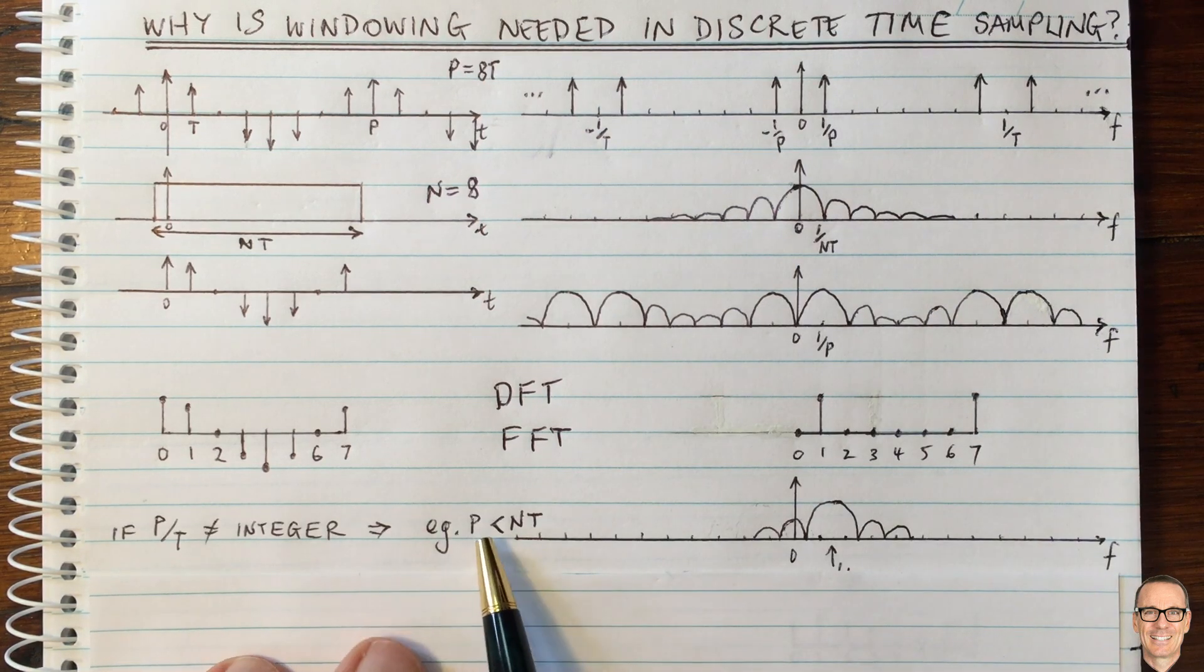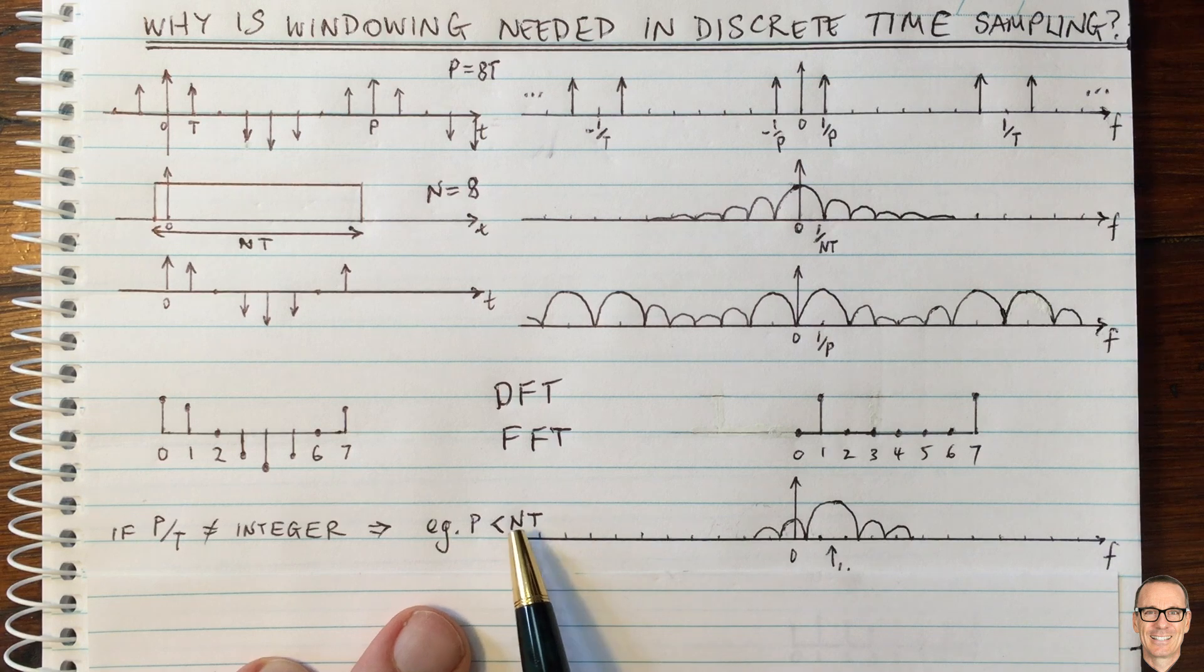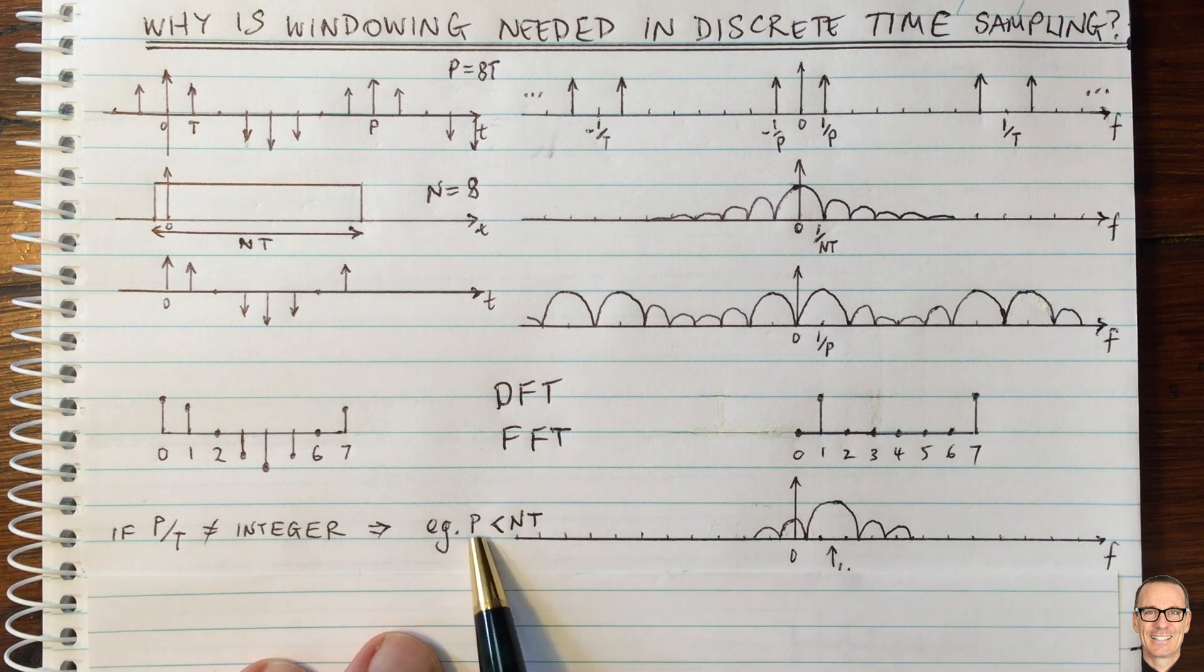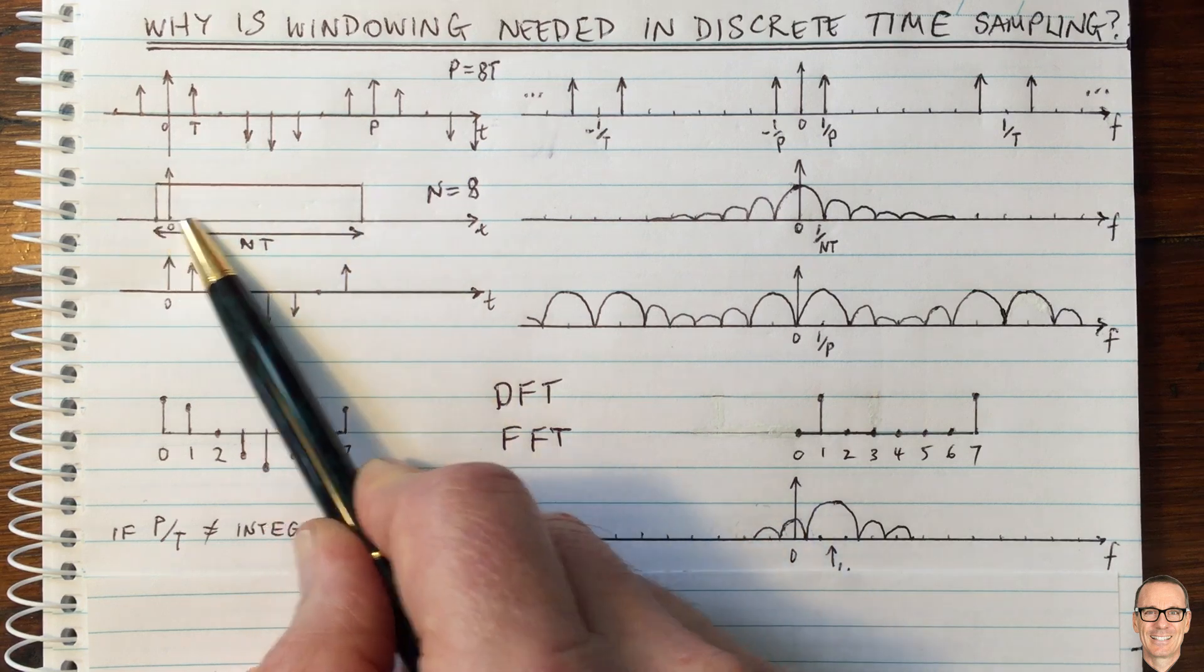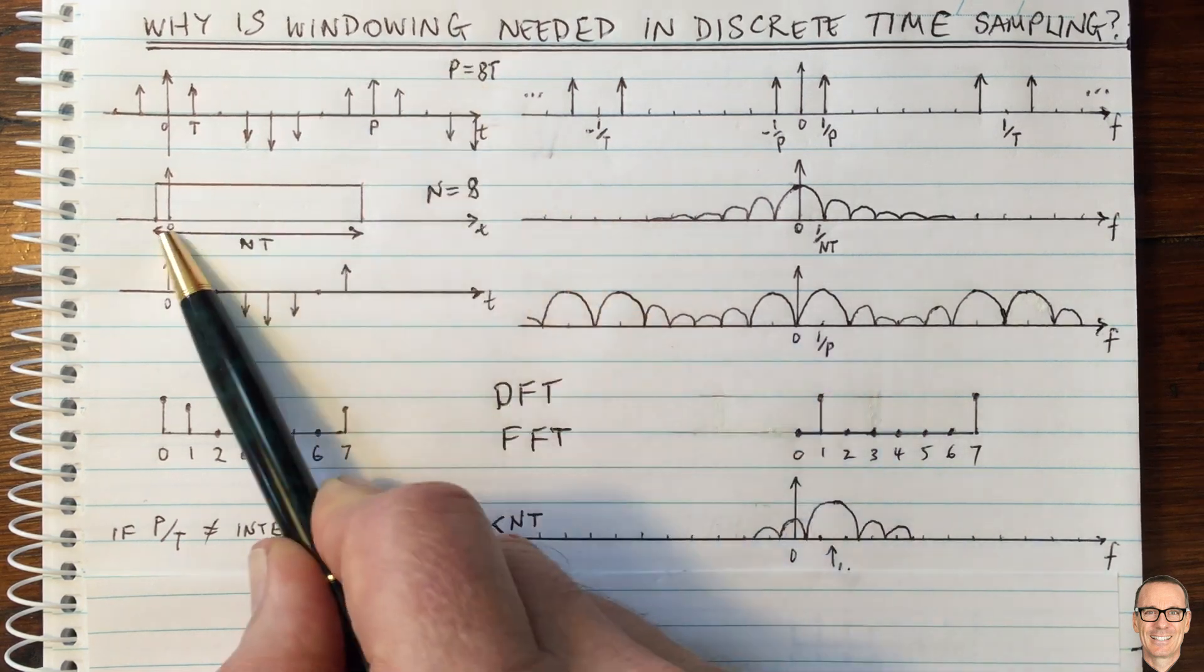Let's take P to be, for example, slightly less than N times T. What does that mean? That means we're still sampling over the same windowed period. So our window remains the same.